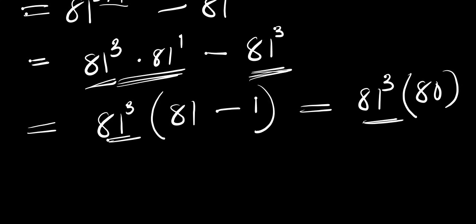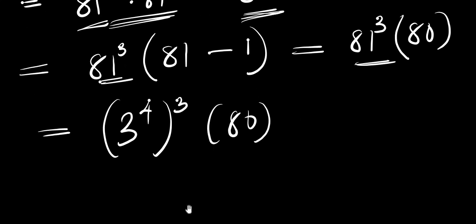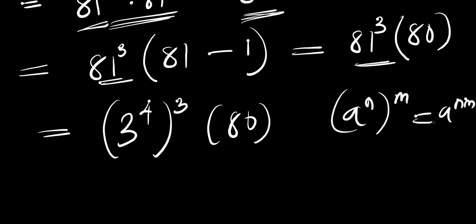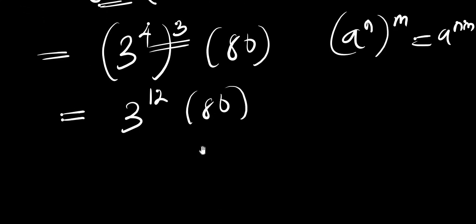Now, recall that 81 equals 3^4, so 81^3 becomes (3^4)^3, multiplied by 80. Applying the identity (a^n)^m = a^(n×m), we multiply the exponents: 4 times 3 gives 12. So we now have 3^12 times 80.